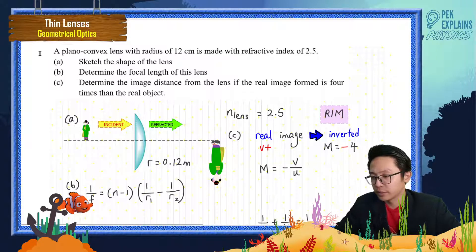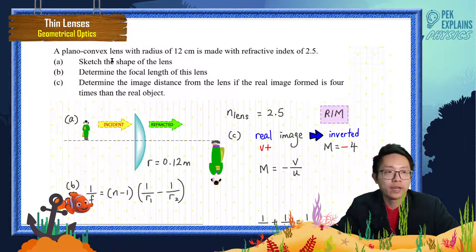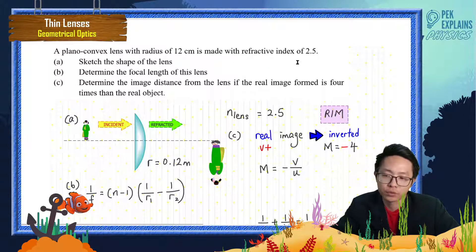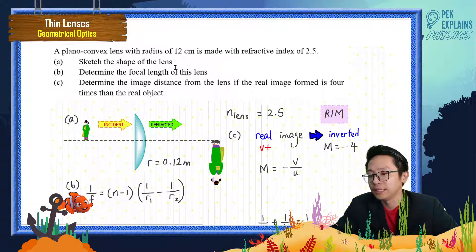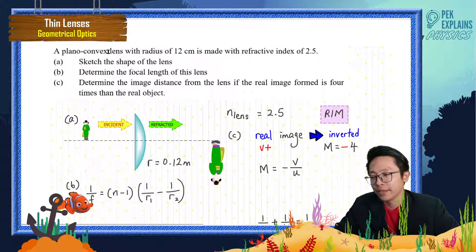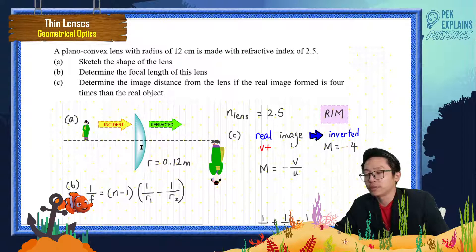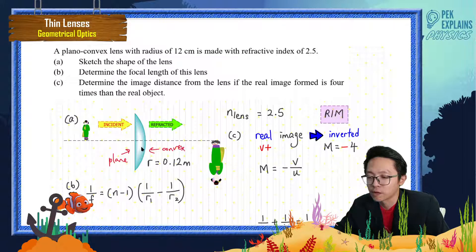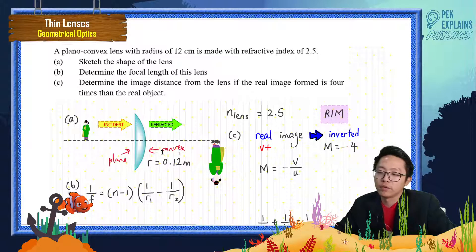Let's read this question: a plano-convex lens, radius 12 cm, made with a refractive index of 1.5. First, guess the shape of the lens. What is a plano-convex lens? Plano means it's a plane — so from one side it's flat, and convex means from the other side it's curved outward, like a fat guy. So it's plane on one side and convex on the other.